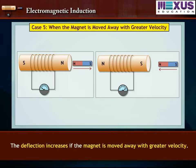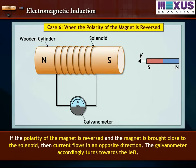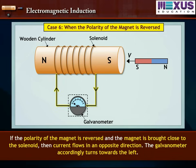The deflection increases if the magnet is moved away with greater velocity. If the polarity of the magnet is reversed and the magnet is brought close to the solenoid, then current flows in an opposite direction and the galvanometer accordingly turns towards the left.